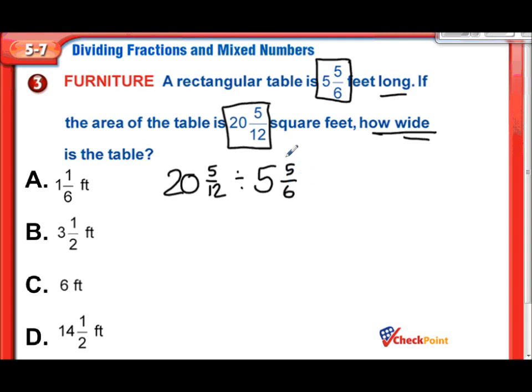So 20 and 5 twelfths divided by 5 and 5 sixths. As I said in the previous slide, we need to turn these into improper fractions before we work with them. 20 times 12, that's the same thing as 2 times 12 plus an extra zero, so that's 240. Plus the extra 5, that makes 245 over the original denominator of 12. We're dividing that by 6 times 5 is 30, and 30 plus 5 is 35, so 35 over 6.